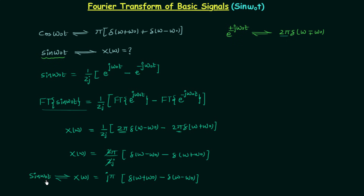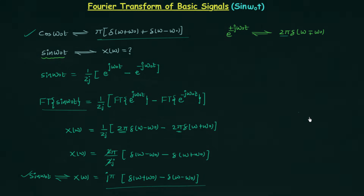Remember this Fourier transform. We now have the Fourier transform of cos(ω₀t) and the Fourier transform of sin(ω₀t). You can see the difference between the two: for cosine we have π, for sine we have jπ; here we have a positive sign and for the other we have a negative sign. If you have any doubts, you may ask in the comment section.